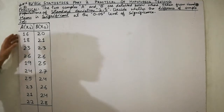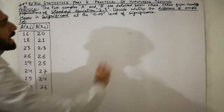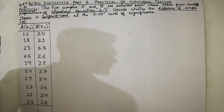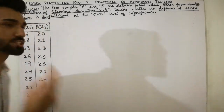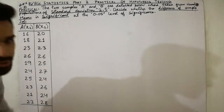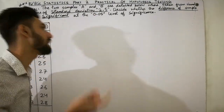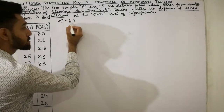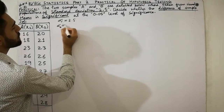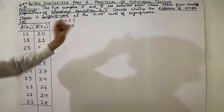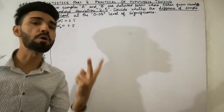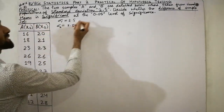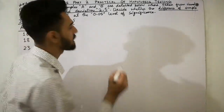Here two samples A and B are given. We have the standard deviation of populations. We are discussing two populations: x1 and x2. The standard deviation is given as one, but must remember sigma 1 is 2.5 and sigma 2 is also 2.5. So sigma 1 = 2.5 and sigma 2 = 2.5.